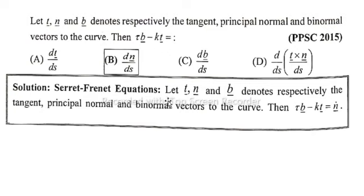Serret-Frenet equations: Let t vector, n vector and b vector denote respectively the tangent, principal normal and binormal vector to the curve. Then tau b vector minus k t vector is equal to n vector, so option b.